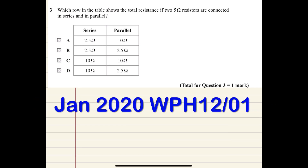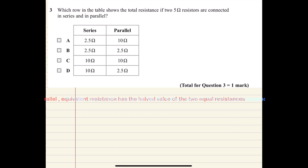Which row in the table shows the total resistance if two 5-ohm resistors are connected in series and in parallel? For the parallel connection, the formula is one over R total equals one over R1 plus one over R2.